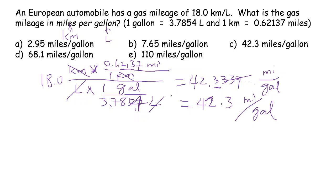Now, obviously, the answer is C, 42.3 miles per gallon. And that is the same as 18 kilometers per liter.